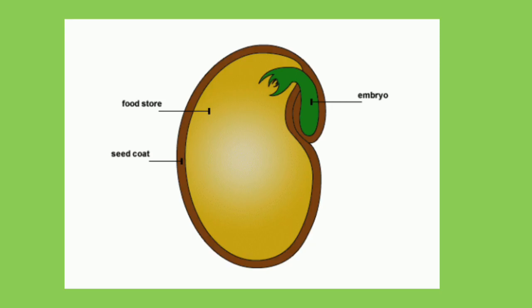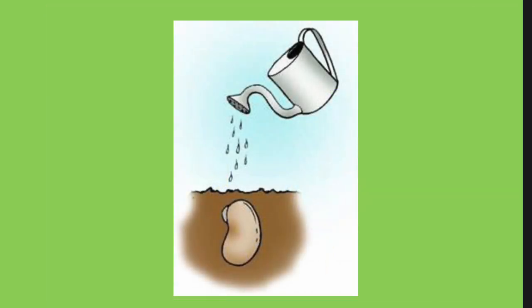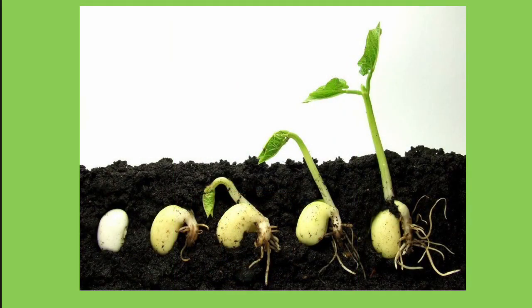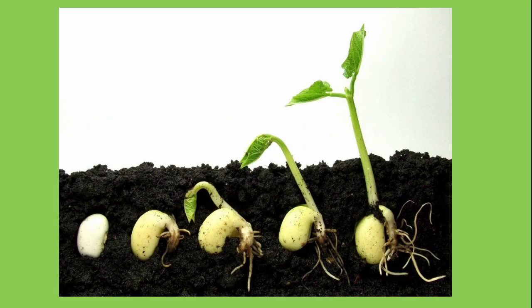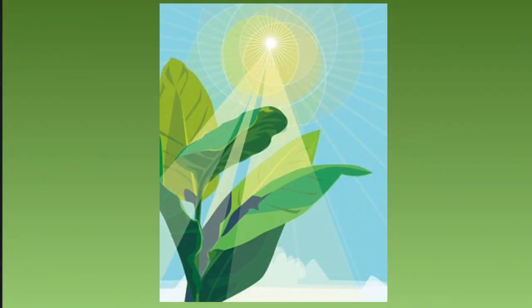Let's look at the function of each of those three things. The embryo of the seed is the part that will go on to grow into a new plant. The embryo will not start growing until the seed has been watered — we call the process of a seed starting to grow germination. During the early stages of germination, the embryo needs a food store in order to grow, because the embryo cannot make its own food.